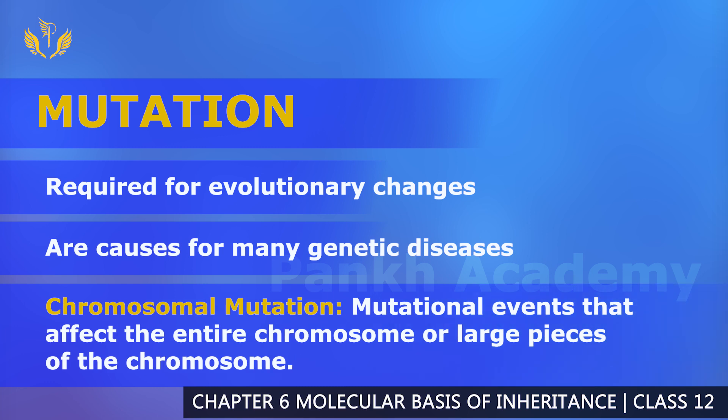Another type is chromosomal mutation. What happens in chromosomal mutation? These are mutational events that affect the entire chromosome or a large piece of chromosome. The large part of the chromosome undergoes change.